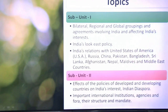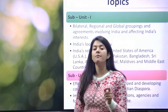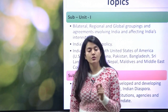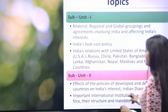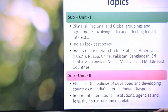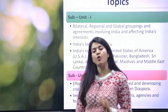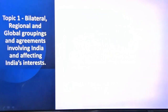Subunit 2 has two topics. One is the effects of policies of developed and developing countries on India's interests, and Indian diaspora. When you look at previous year questions, the other important topic is important international institutions, agencies, and their forums — again very current oriented.